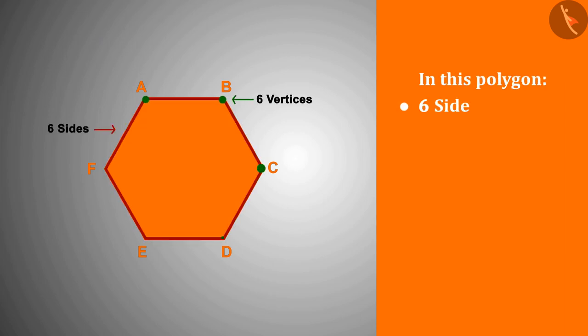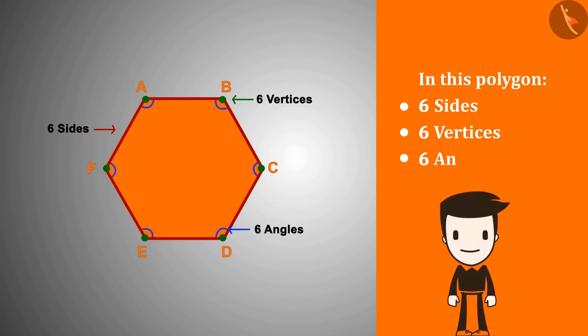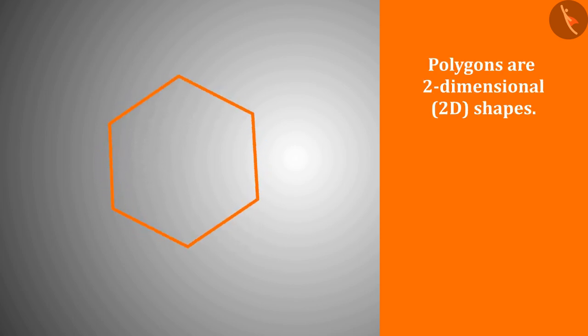There are six sides, six vertices, and six angles in this polygon. The last but most important fact for polygons is that polygons are two-dimensional 2D shapes. That is, all the vertices of polygons are in the same plane.